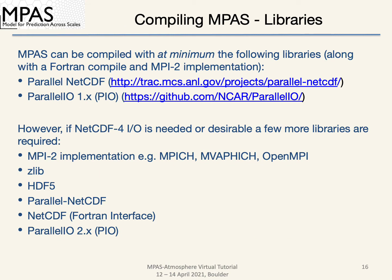Depending on which features you need, there are two main ways of compiling the libraries needed for MPAS. Both ways require the C and Fortran compiler and MPI2 implementation. At a bare minimum, pnetcdf and 1.x versions of parallel IO are needed. However, if netcdf4 IO is needed, there are a few more libraries you will need to install. You'll have to install these libraries on your own, but each comes with its own instructions. Look for the install or build files, and most libraries also have a webpage with build instructions. If your institution has IT staff, reach out to them for help.